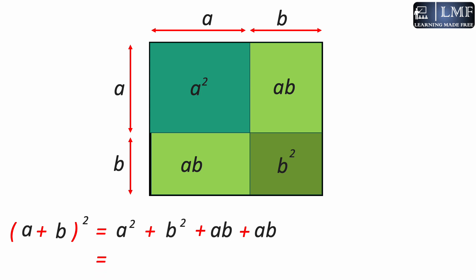If we solve this equation it gives us a square plus b square plus 2ab. And this gives us the understanding of the formula a plus b whole square as a square plus b square plus 2ab.